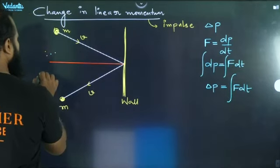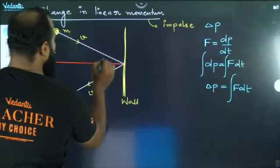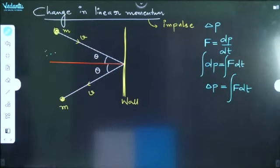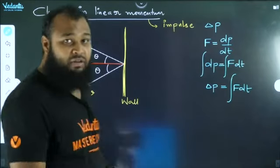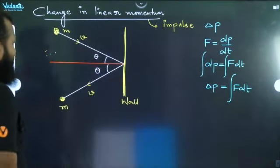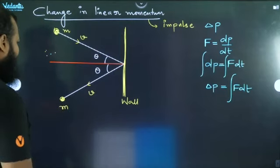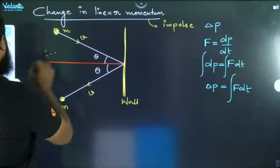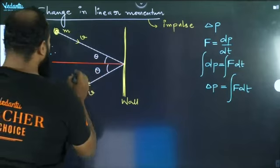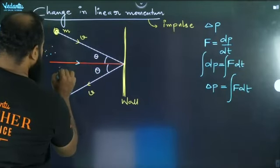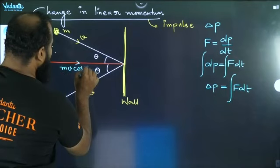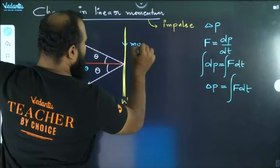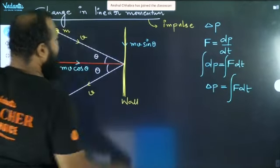We draw the line and the angle. Let us try to find the angle. We have to find this angle and this angle. Momentum changes — what is the direction? Let us try to find out the change in momentum. Momentum is a vector quantity. I will make the two components of momentum. First component is mv cos theta, and it is mv sin theta.